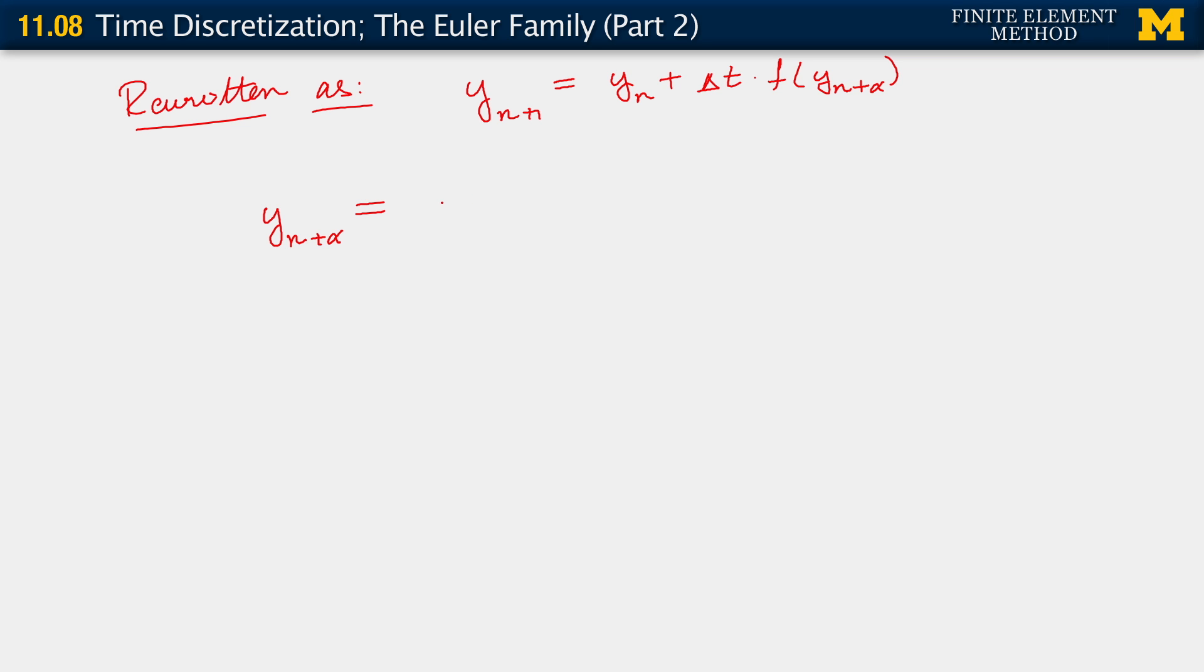Y_n+alpha is constructed simply as a linear interpolation between values at alpha equals 0 and alpha equals 1. And that tells you that you construct it as alpha times y_n+1 plus 1 minus alpha times y_n.